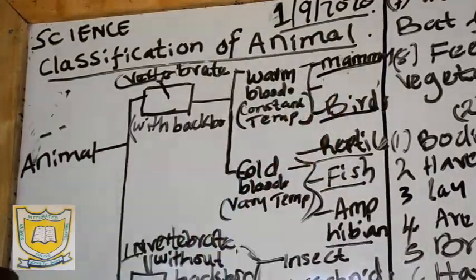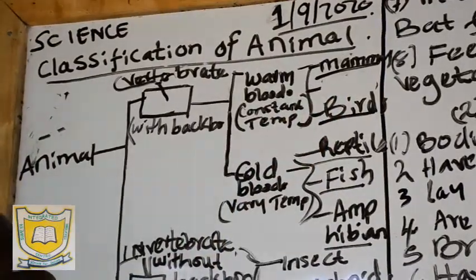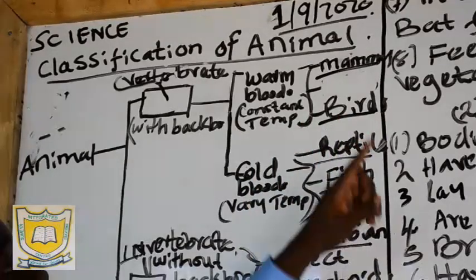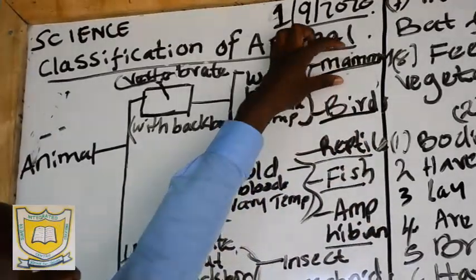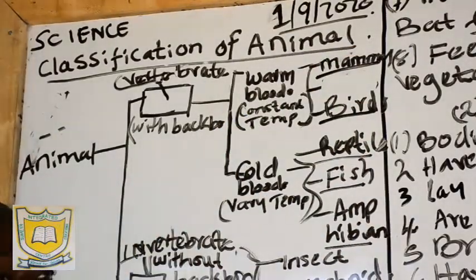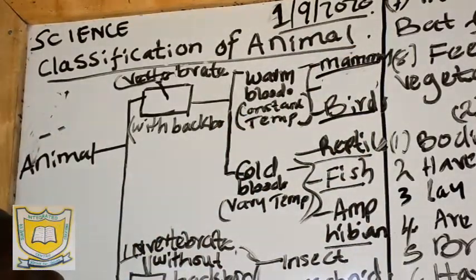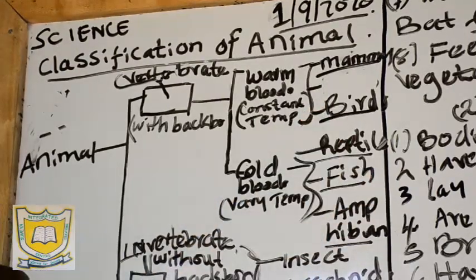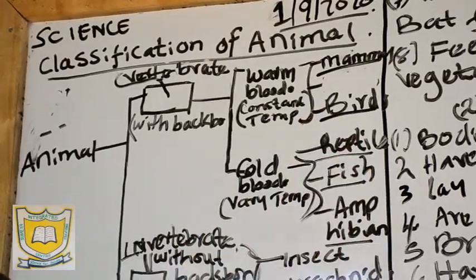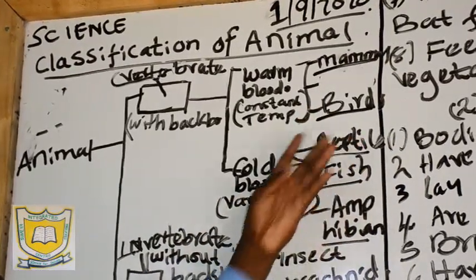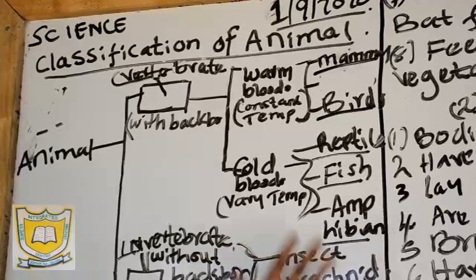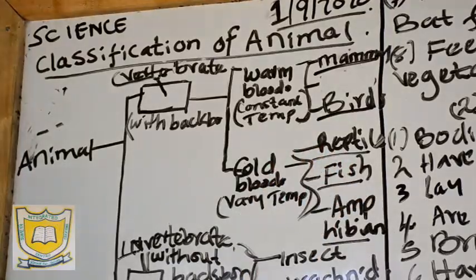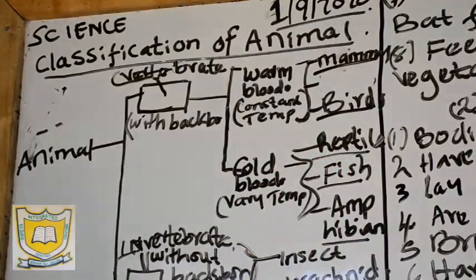Examples of mammals include human beings. Mammals are animals that have mammary glands — they produce milk. We also have bats. We will talk about the characteristics of mammals, characteristics of birds, reptiles, fish, and amphibians.